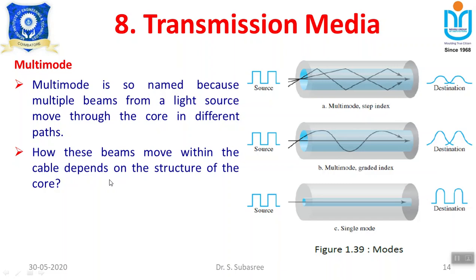How the light beams move inside the cable structure depends on the cable being used. In step index, the beam travels in straight high-and-low reflections. The curved reflection model is graded index. These are the two different mechanisms under multi-mode. Another one is called single mode, where light travels in a straight line at exactly 90 degrees to reach the destination. Single mode is the best compared to multi-mode step index or graded index, but the cost of implementation is very high.